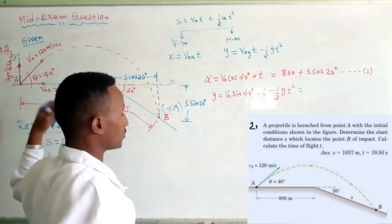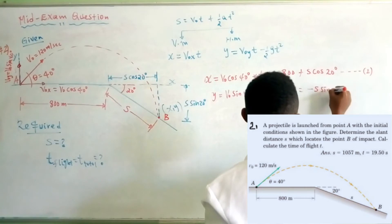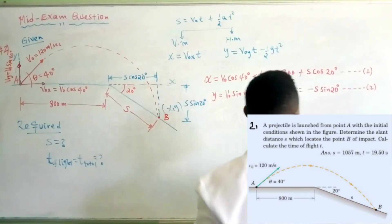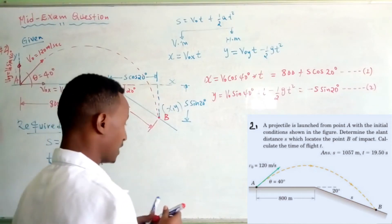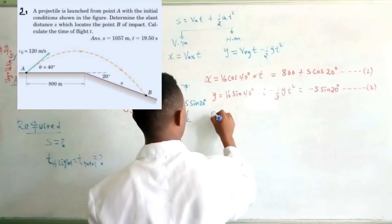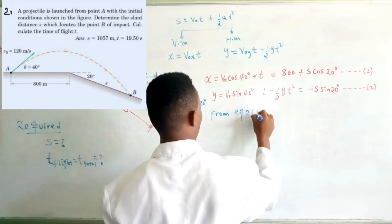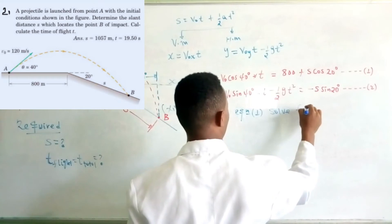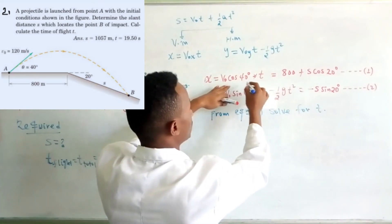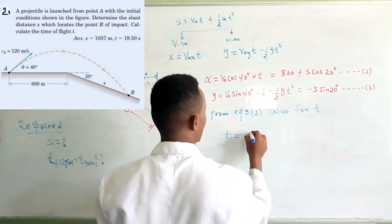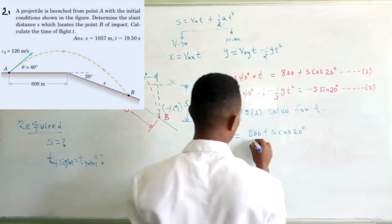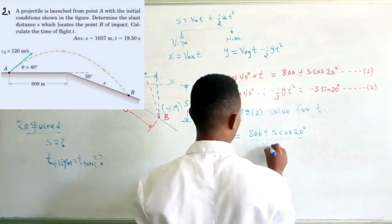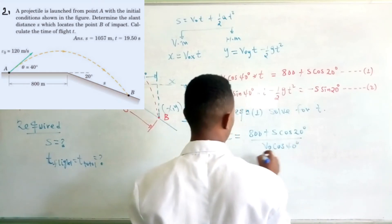The y-axis or y-value becomes negative S sine 20 degrees — that is equation 2. From equation 1, we solve for time. We must solve equation 1: T equals 800 plus S cosine 20 degrees over v-naught cosine 40 degrees. This gives us time — equation 3.